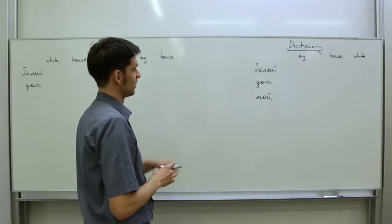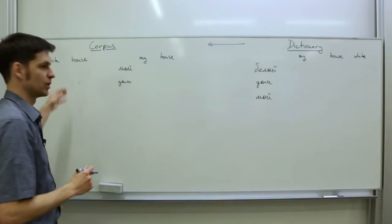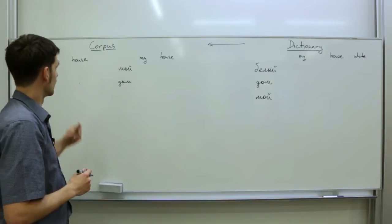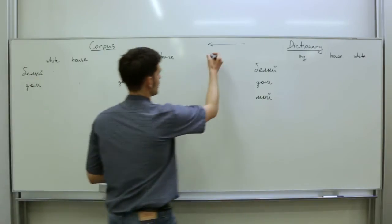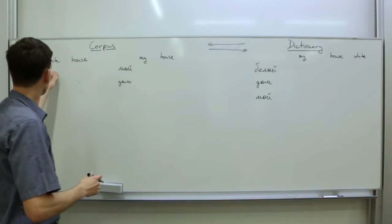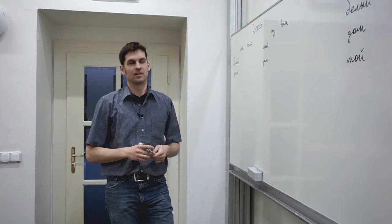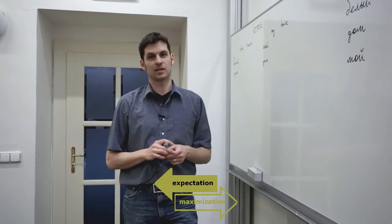If you have the dictionary, you can easily find the best matching word pairs in a given corpus. And on the other hand, if you had a corpus and the corpus was fully aligned, you could easily extract the dictionary by looking up how often a word co-occurred and was linked to another word. This is actually the basis of the expectation maximization algorithm.